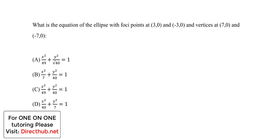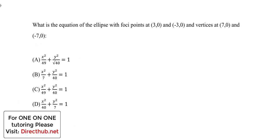Let's do another analytic geometry question where we are still looking at conic sections, but in this case we are determining the equation of an ellipse. We're asked: what is the equation of the ellipse with foci points at (3, 0) and (-3, 0), and vertices at (7, 0) and (-7, 0)? We want to find the appropriate equation for the ellipse.